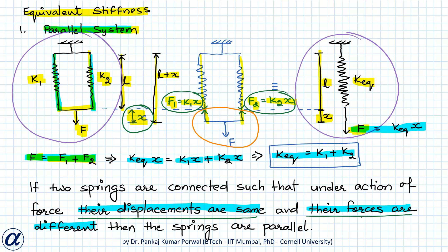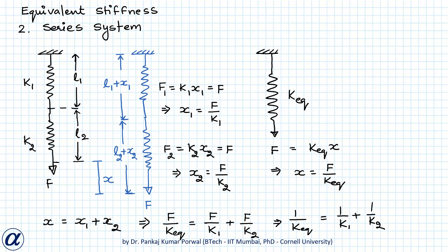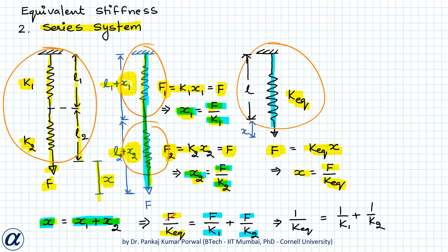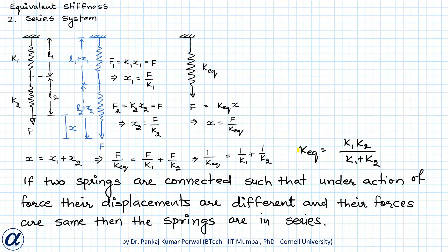In a series system we have two springs with stiffnesses k1 and k2 and lengths l1 and l2. For this system, 1 over k equivalent equals 1 over k1 plus 1 over k2, which can also be written as k equivalent equals k1·k2 over (k1 plus k2).